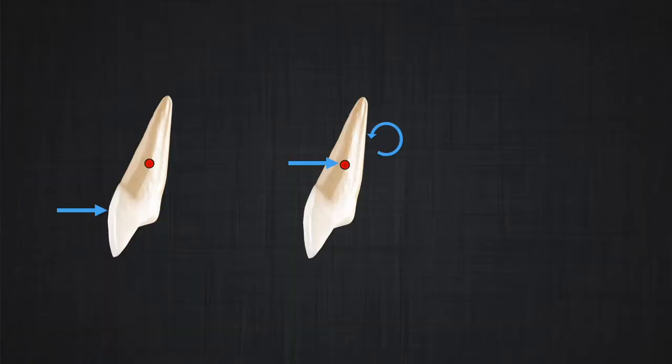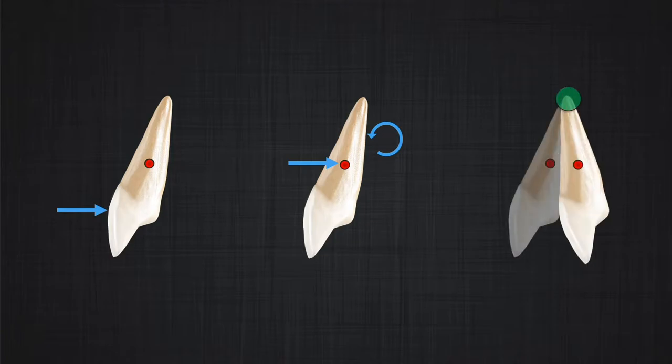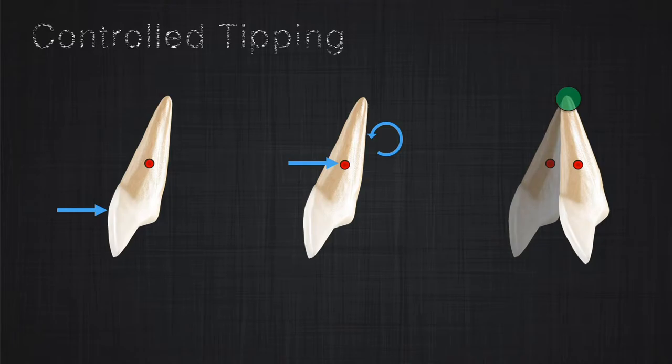It means that we did not change the displacement component of the movement — same force, therefore we should have the same displacement. However, we changed the rotation component of the movement; it is now less rotation. Now, if you look at the movement at the end, it seems that the center of rotation of this movement is close to the apex, maybe a little bit below, maybe a little bit above, but it seems it's moving toward and passing through the apex slightly. That is controlled tipping.